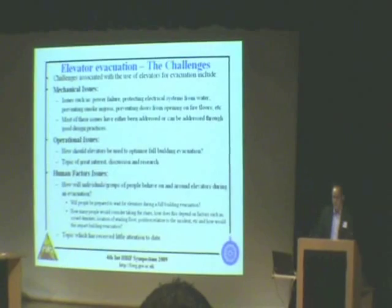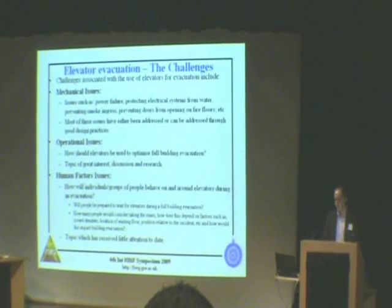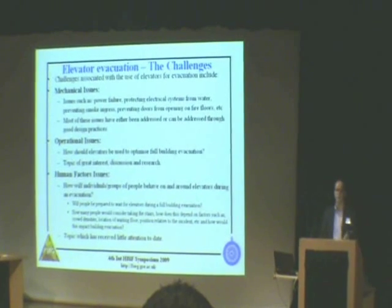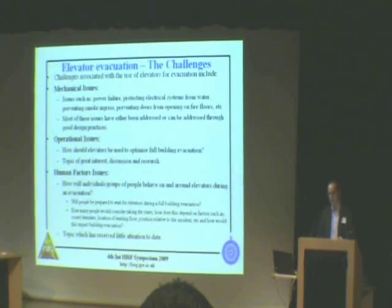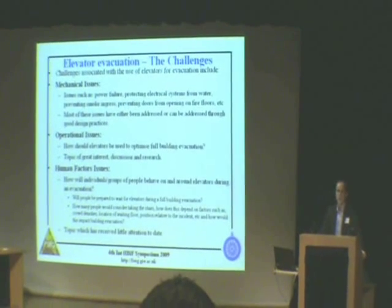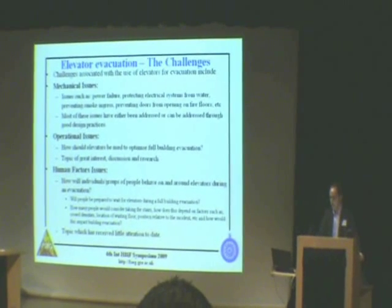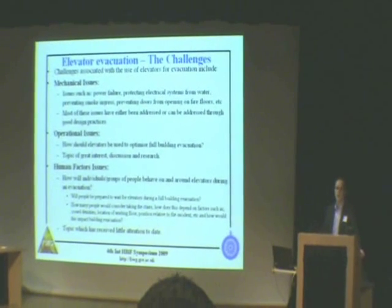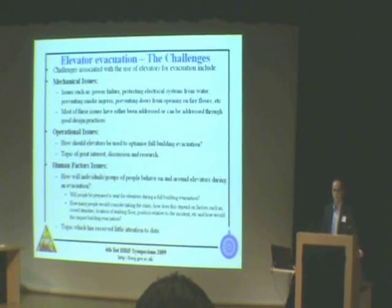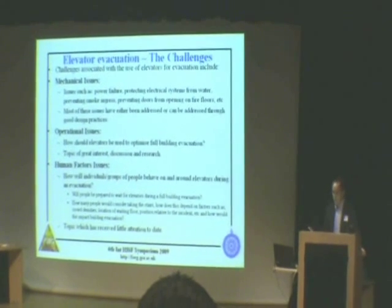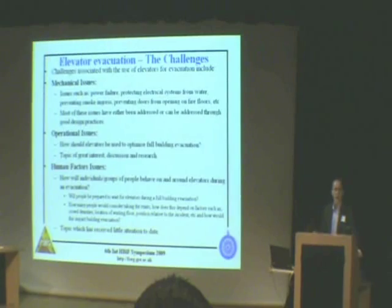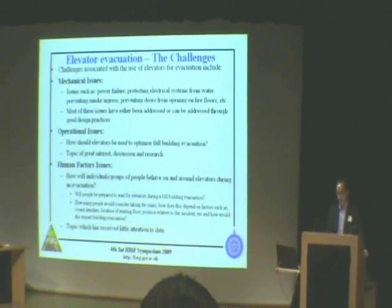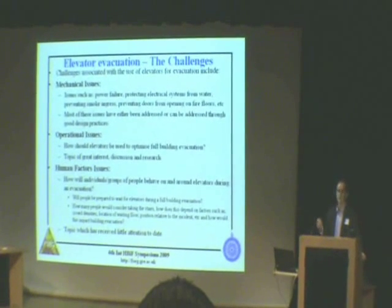Essentially, there are three challenges we face with elevator evacuations. There are the mechanical issues — how can we make the inner workings of elevators resilient to hazardous scenarios? Quite a bit of progress has been made in this area. The next issue is operational: how can we efficiently use elevators to evacuate people from the building? And the third issue is human factors: how are people going to behave, given that they have the option to use elevators? This topic has received little attention to date.